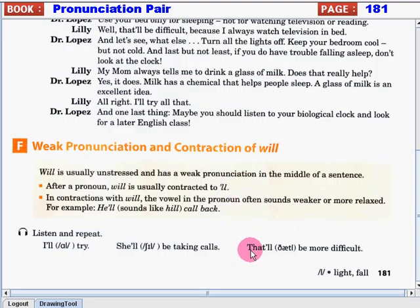I'll try. This word is coming from the word I will try. I'll try. She'll be taking calls. This word is coming from the word she will be taking calls. She'll be taking calls. That'll be more difficult. This word is coming from the word that will. That will be more difficult or that'll be more difficult.